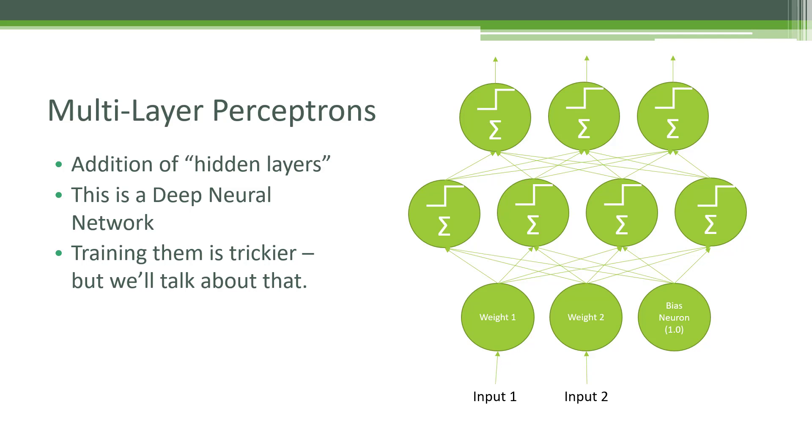There are challenges of training these things because they are more complex, but we'll talk about that later on. The thing to really appreciate here is just how many connections there are. Even though we only have a handful of artificial neurons here, there's a lot of connections between them, and there's a lot of opportunity for optimizing the weights between each connection. An individual linear threshold unit is a pretty simple concept, but when you put them together in these layers, you can get very complex behavior.